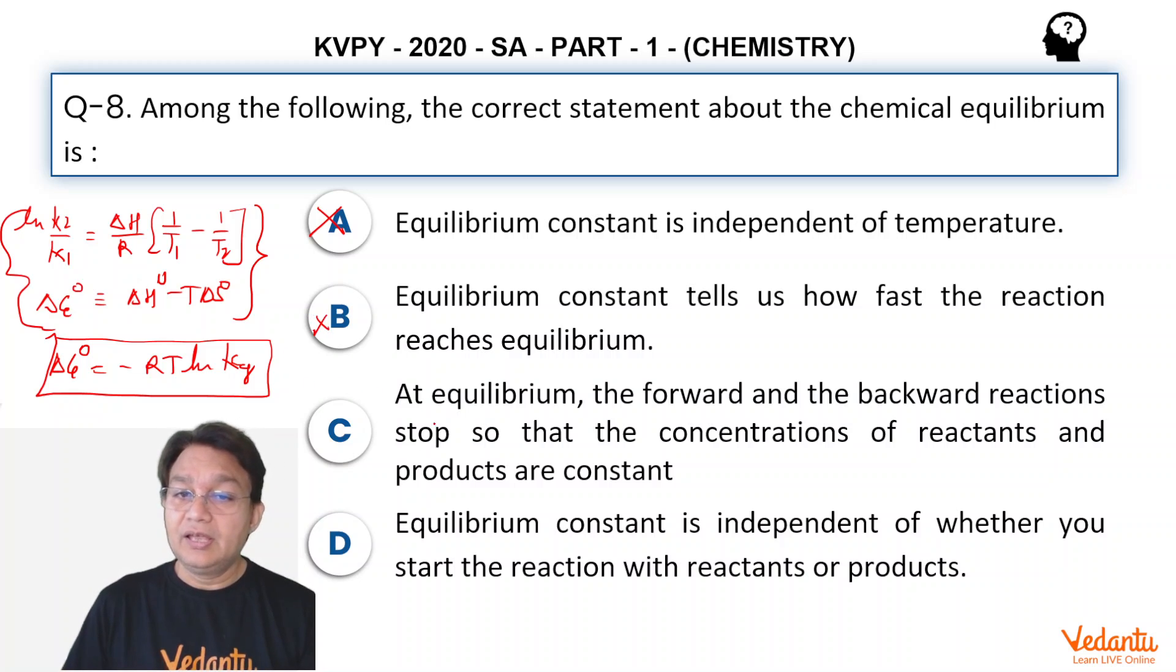That's also wrong. At equilibrium, the forward and backward reaction stops so that the concentrations of reactant and product are constant. No, that's also not correct. So the inside story is at equilibrium, the equilibrium is always dynamic in nature and we can prove it by many different ways. So this is also incorrect.